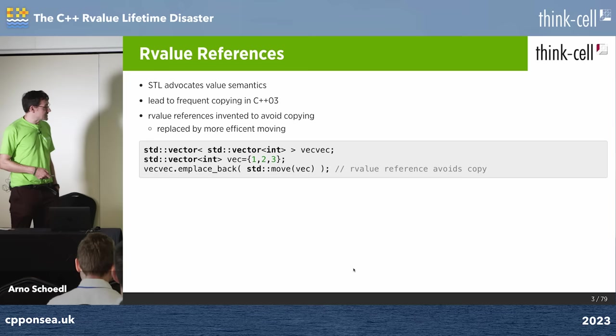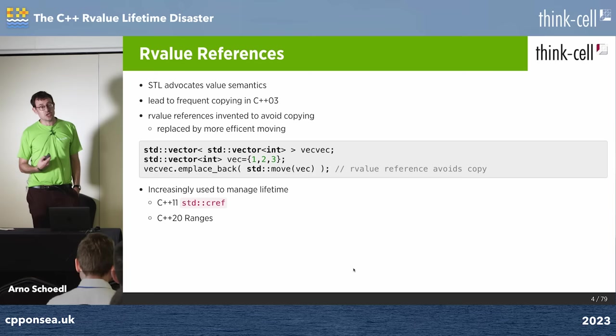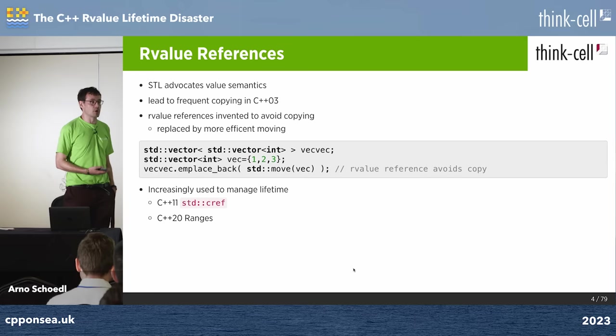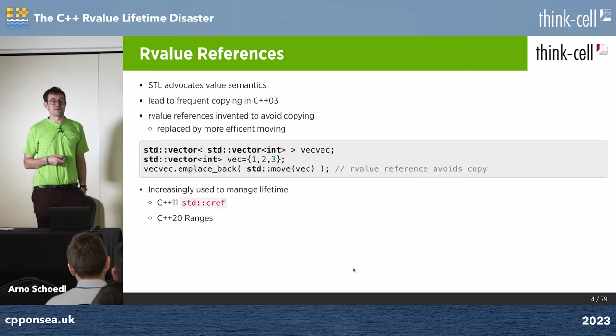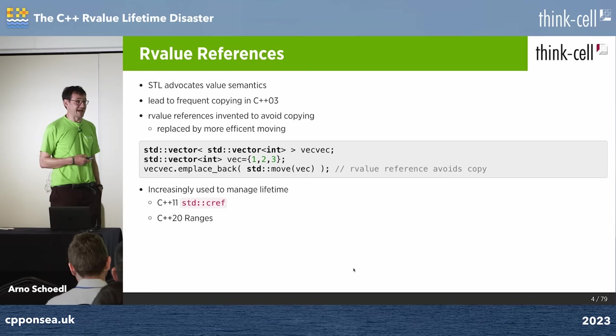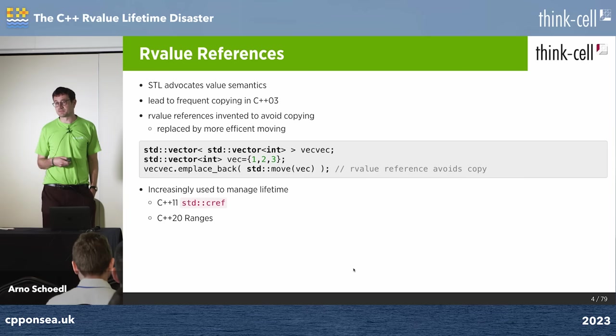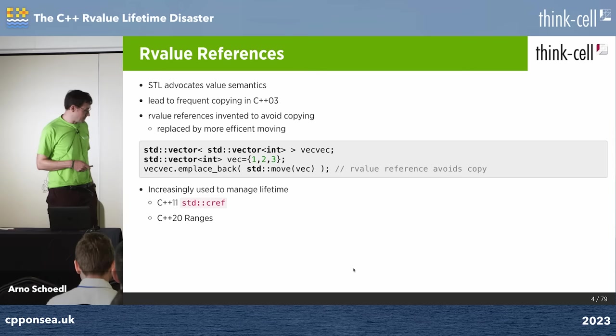But very early on, they actually started using R-value references to talk about lifetime — to know something about lifetime. When something is an R-value, it's probably going to go out of scope pretty soon, and that was the reason you could steal its resources. But C++11's std::cref already said: if this is going out of scope pretty soon, that's not a reference you want to keep around for a long time because it's going to be dangling. So std::cref, this reference wrapper from C++11, will only allow you to construct from L-value references, not R-value references.